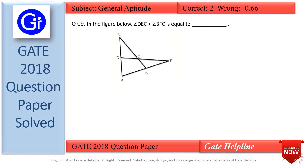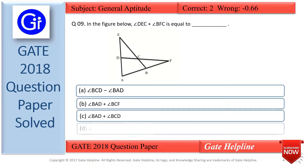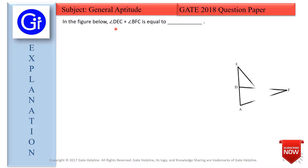Question number 9: in the figure below, angle DEC plus angle BFC is equal to dash. Below is the figure and the options are A, B, C, and D. Now we will see the explanation to this question. We are given that angle DEC plus angle BFC is equal to dash.